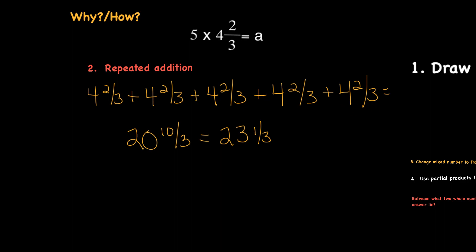So if I add all of my whole numbers first, I get 20. And then I'm going to add my numerators, which I get 10. And of course, we put that over 3 as our denominator, and we have 20 and 10 thirds. So we're going to turn that into 23 and 1 third as our final answer, because 10 thirds is larger than 1, so we need to change that into a bigger mixed number.